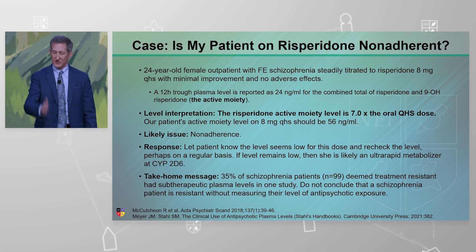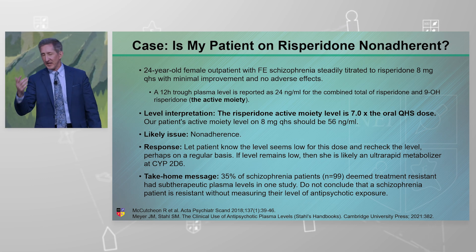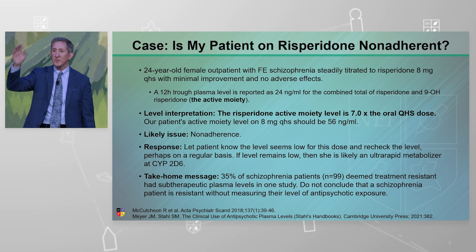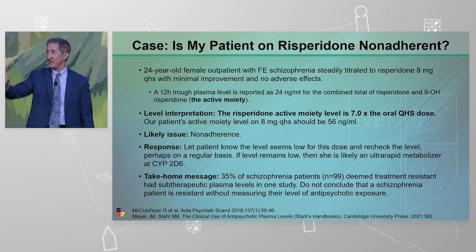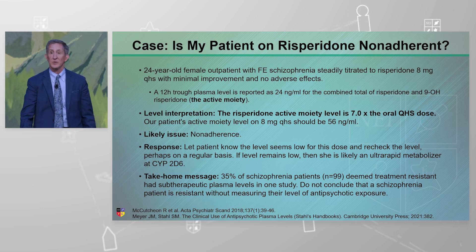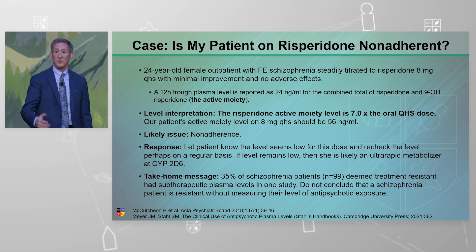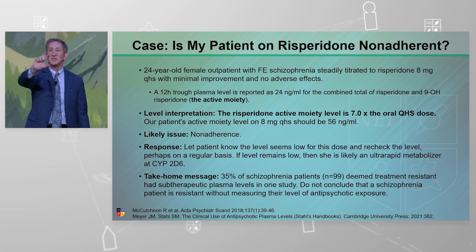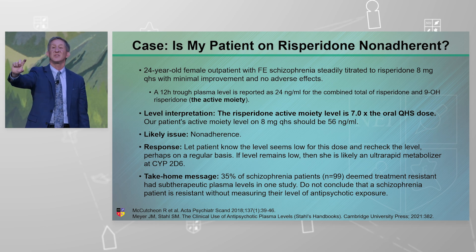People who are non-adherent are non-adherent in an inconsistent manner — they take it when they take it, they don't take it when they don't. The numbers jump around all over the place. If you see consistently low levels — and we see this not uncommonly with clozapine and other drugs where they maybe don't absorb it — they're always low but consistent. It's not a metabolism issue and it's not an adherence issue; there's something else going on.